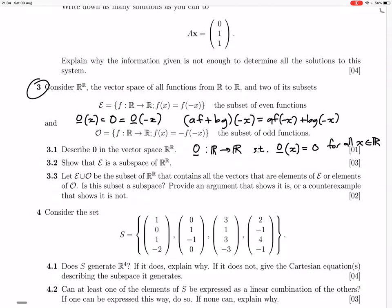3.3. Let E union O be the subset of R to R that contains all the vectors that are elements of E or elements of O. Is this subset a subspace? Provide an argument that shows it is or a counterexample that shows it's not. So just all the even functions and odd functions. Not a subspace. It's got the zero vector there, sure, because the zero vector is even. Is it closed under addition? If you take an even function and add it to an odd function, do you get an even function or an odd function? You might get neither, right? So like x is odd and 1 is even, but x plus 1 is neither even nor odd. So that would be a counterexample.